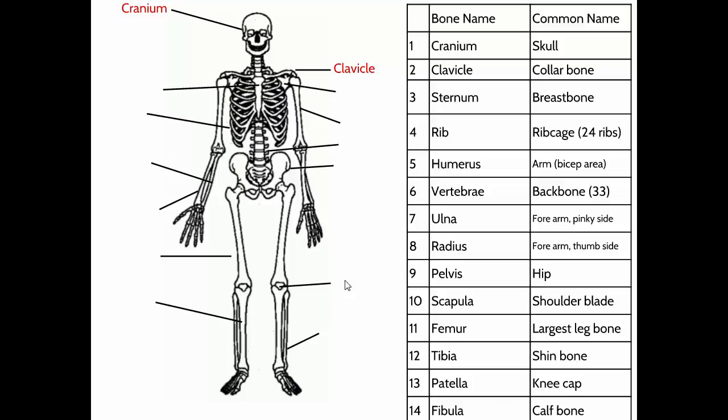Number three is this thick bone right in the center of your chest — that's called the sternum. The sternum is another protective bone; it makes up the center of your rib cage. Inside the rib cage are your heart and lungs — vital organs for survival — so your sternum helps protect those important organs.